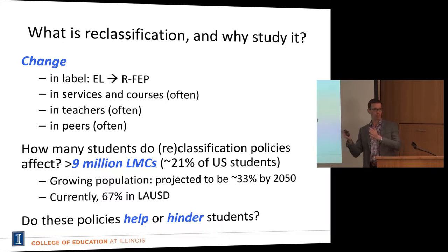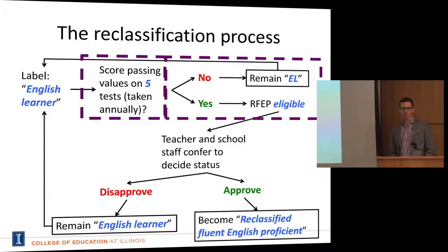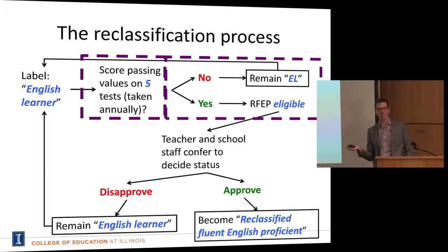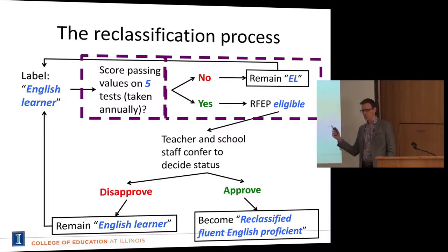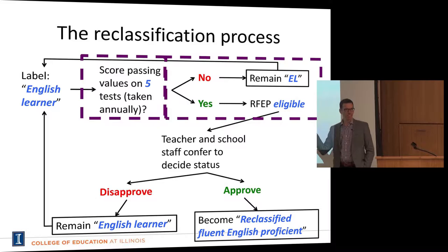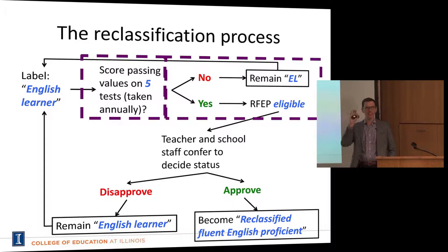First we need to understand how a student moves from English learner status to reclassified fluent English proficient status. I'll present a flowchart for how this works in California. Each year, students take the California Standards Test of English Language Arts that all students take, and also the California English Language Development Test — the CELT — to assess their English proficiency. That test has three sub-components: reading, listening, speaking, and writing — five scores in total.